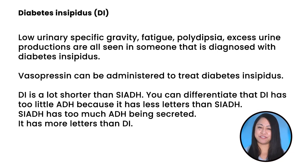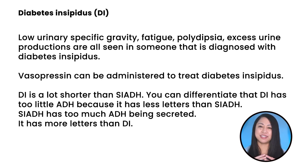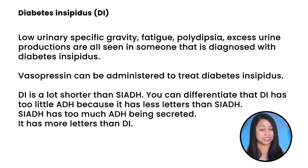Low urinary specific gravity, fatigue, polydipsia, and excess urine production are all seen in someone diagnosed with diabetes insipidus. Vasopressin can be administered to treat diabetes insipidus. DI is a lot shorter than SIADH — you can differentiate that DI has too little ADH because it has fewer letters than SIADH. SIADH has too much ADH being secreted — it has more letters than DI.